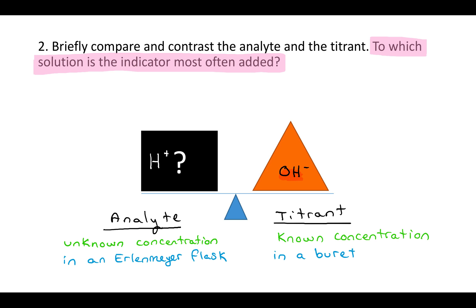The next question says, to which solution is the indicator most often added? And the indicator is a molecule that changes color at a specific pH. If you go back to our balance analogy, where you're trying to figure out the unknown weight by adding a known weight, you know when they're equal because the balance is perfectly level. But when you're adding OH minus, which is clear, to H plus, which is also clear, how do you know when the amount is equal? Because it's just going to stay clear. The way you're going to do that is by adding a molecule called an indicator that will change color around that point.